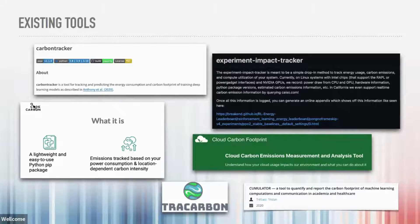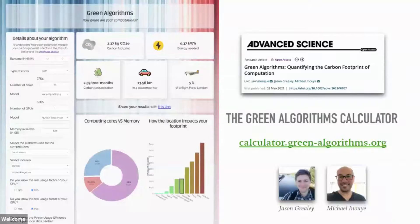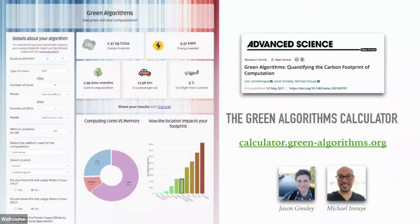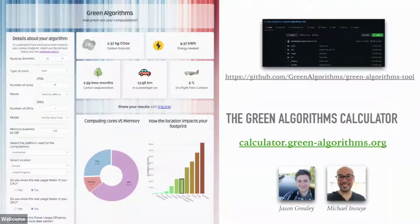That's what motivated the Green Algorithms calculator we put together — an online calculator where you just say what resources you're using, for how long, and where in the world you are. It doesn't matter which field of science or what hardware you're using. The calculator comes up with estimates of carbon footprints as a way to raise awareness. It's all open source on GitHub, and it's been quite widely used — good to see.